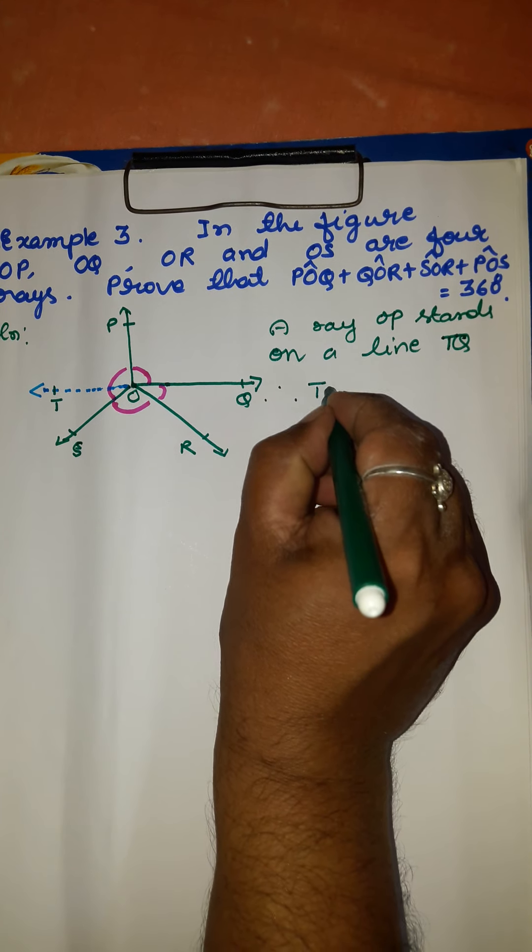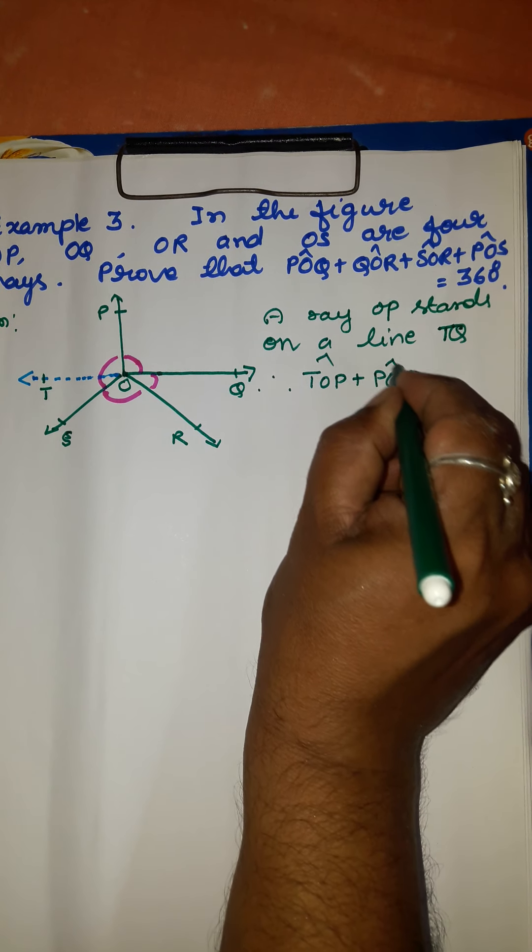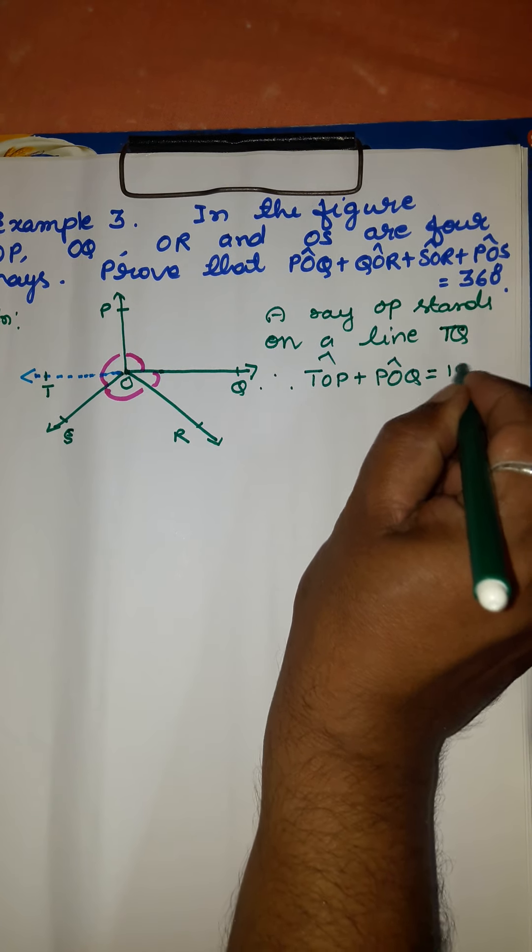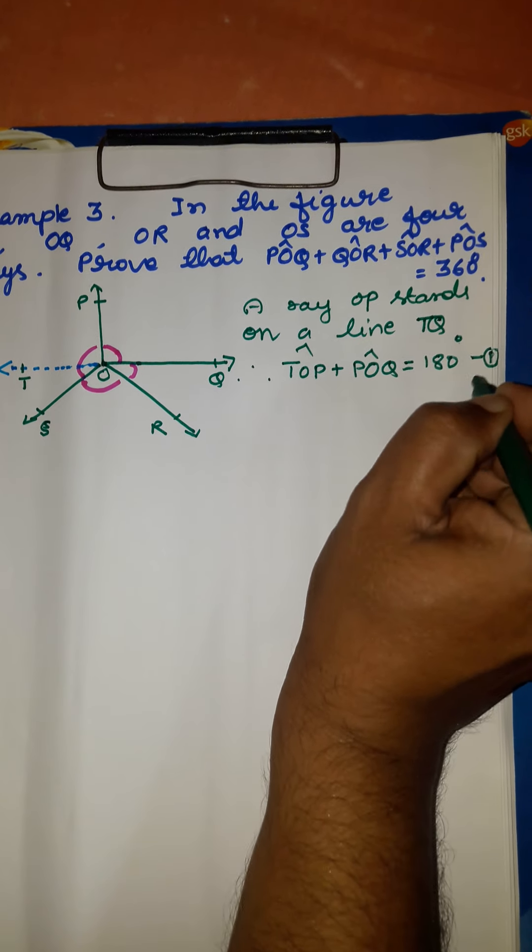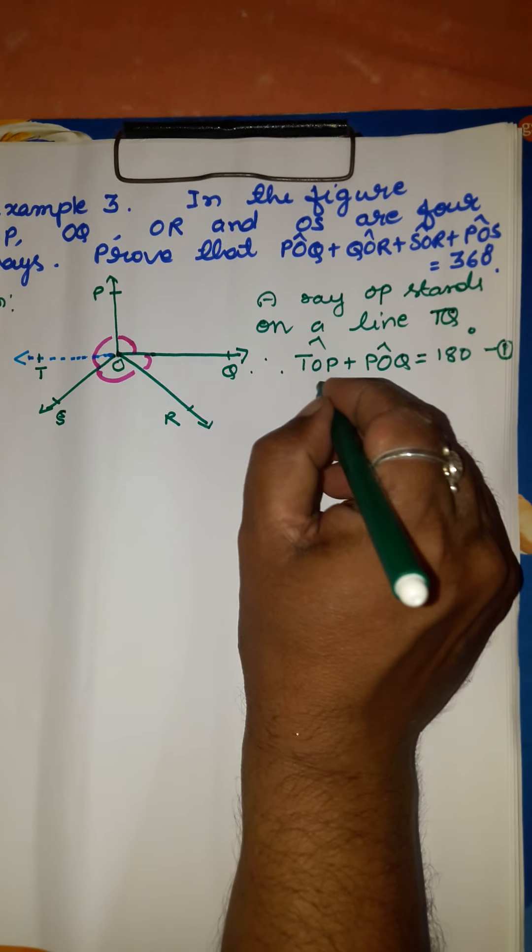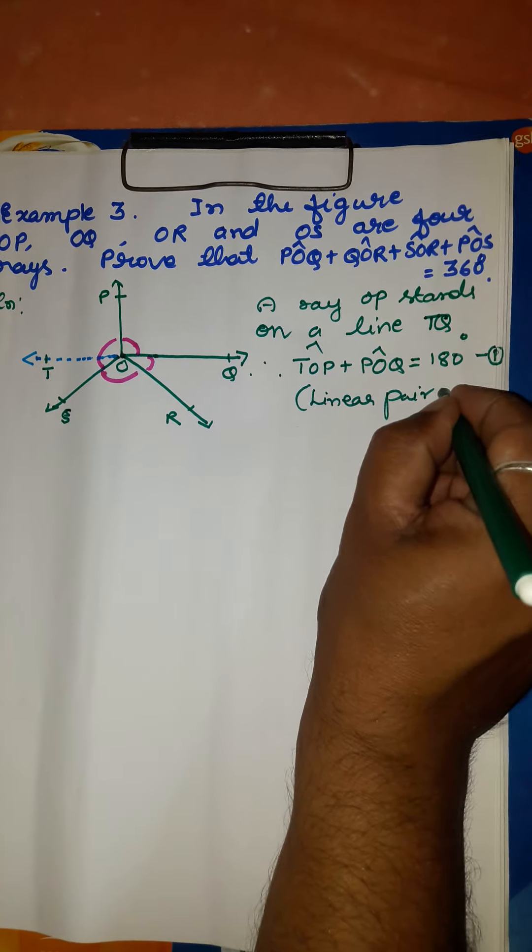Therefore, angle TOP plus angle POQ equals 180 degrees. Call this equation 1. The reason for this is linear pair axiom.